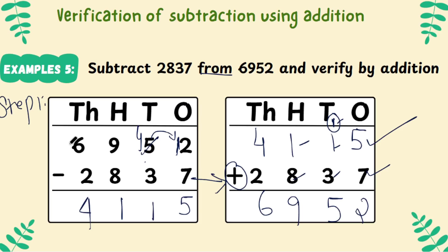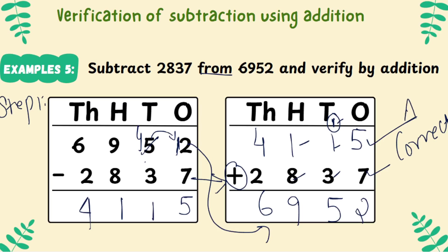The answer is 6,9,5,2 — the same as the original number. If this answer and the original number are the same, you are correct. Your answer is correct.